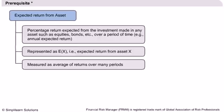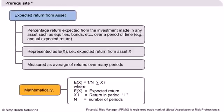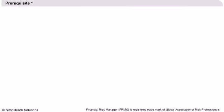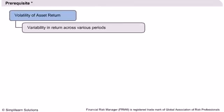Suppose the average return from gold over the last 10 years has been 6% annually — then we can expect to earn this return in the next year. The mathematical expression for calculating expected return is given in the slide, where E(X) denotes expected return, Xi denotes return in period i, and N denotes number of periods. While investing our money...